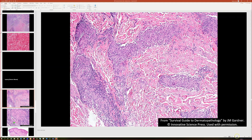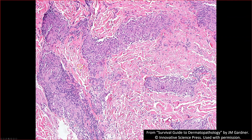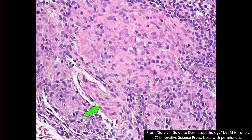Here's an example of tuberculoid leprosy where the granulomas are much more obvious. The cells are linear or serpentine because they're tracking along neural structures and around vessels, and they tend to have dense cytoplasm — less of that loose, fluffy cytoplasm you see in lepromatous leprosy. They're almost sarcoidal granulomas. There's a nerve right here with a sarcoidal granuloma wrapped around it.